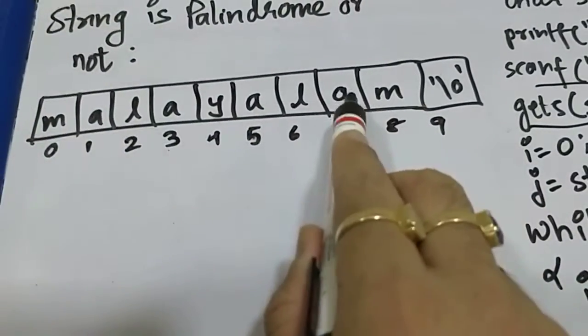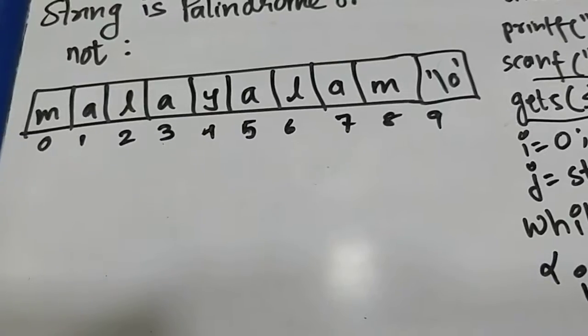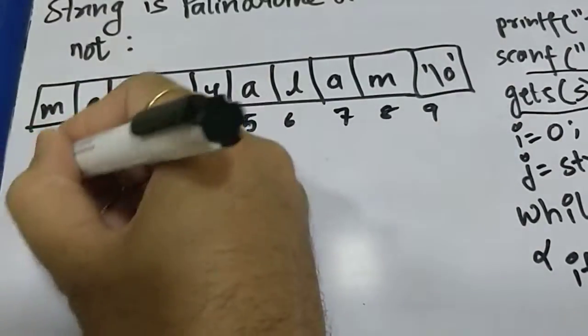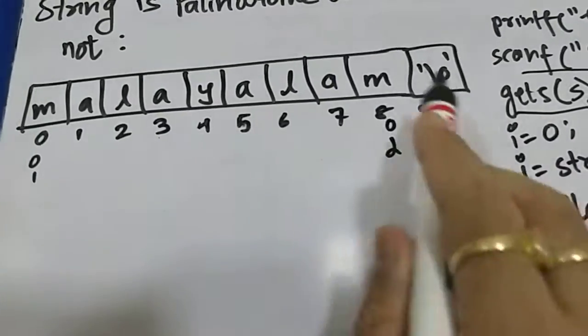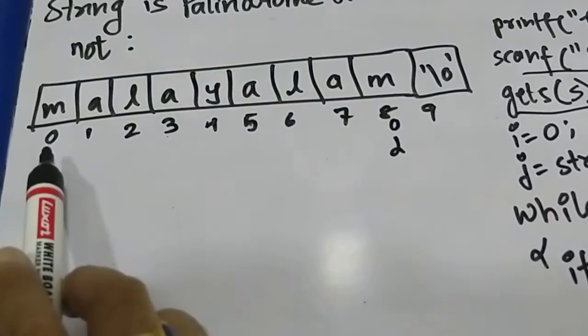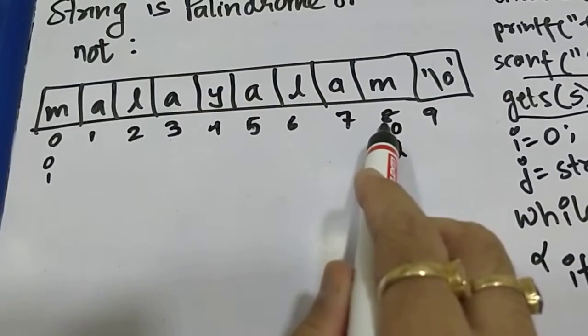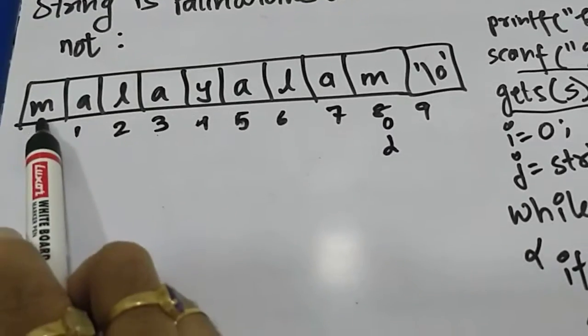What we understand is that if we compare first and last character, i is zero, j is again length minus one. Length of malayalam is nine, so last position, index starts from zero, ends at eight, so j will be at length minus one. If you see, if a string is palindrome, the first and last character will match.